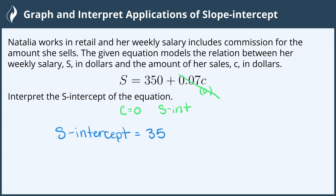This is measured in dollars. So the s, or her weekly salary, will be $350 when the amount of her sales, c, is zero.